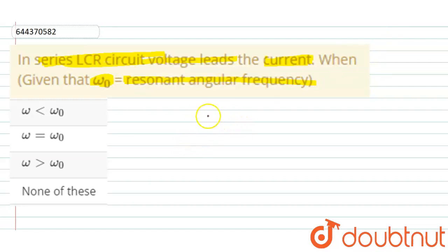We know that when the voltage leads the current in LCR circuit, the equation will be like VL. The voltage across inductor is greater than the voltage across capacitor.